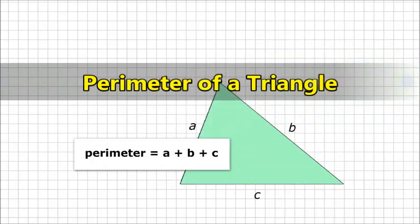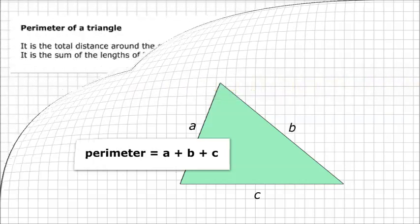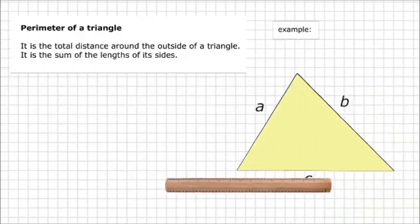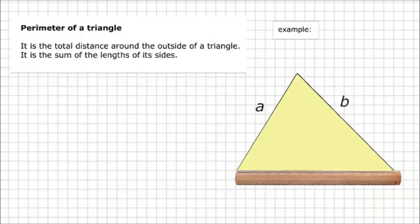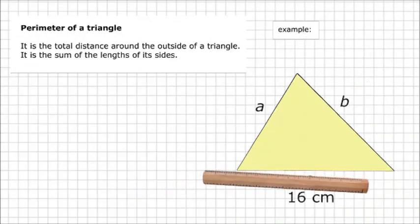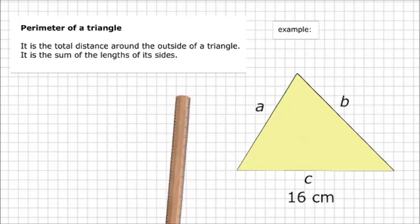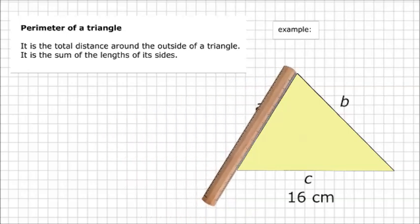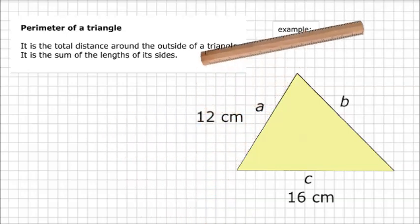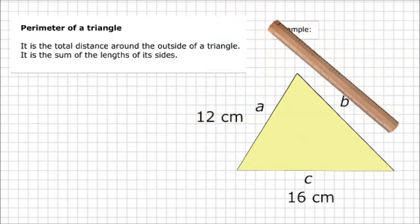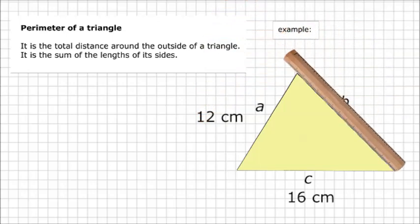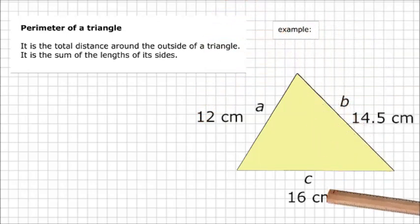Perimeter of a Triangle. Perimeter is the total distance around the outside of a triangle. It is the sum of the lengths of its sides.